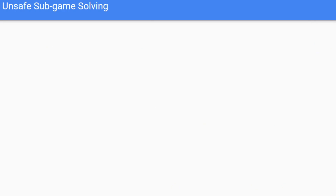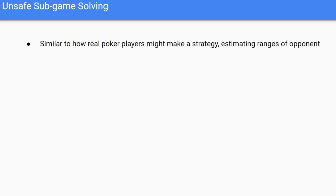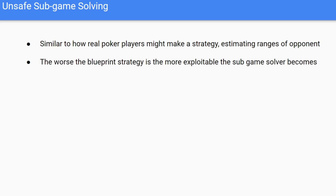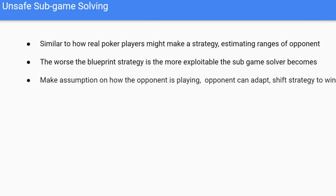Some quick notes on unsafe subgame solving: it's similar to how real poker players estimate what hands their opponent will have and weight them accordingly. The problem is the worse our blueprint strategy is, the more exploitable the subgame solver becomes. The main reason unsafe subgame solving is exploitable is it makes strong assumptions on how the opponent is playing — the opponent can potentially shift their strategy to throw off the unsafe subgame solving.